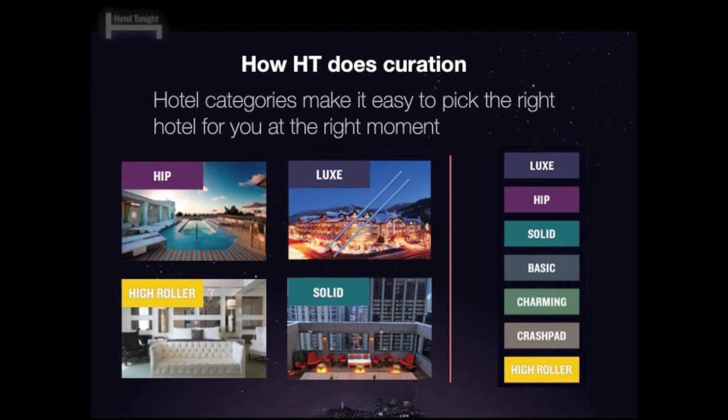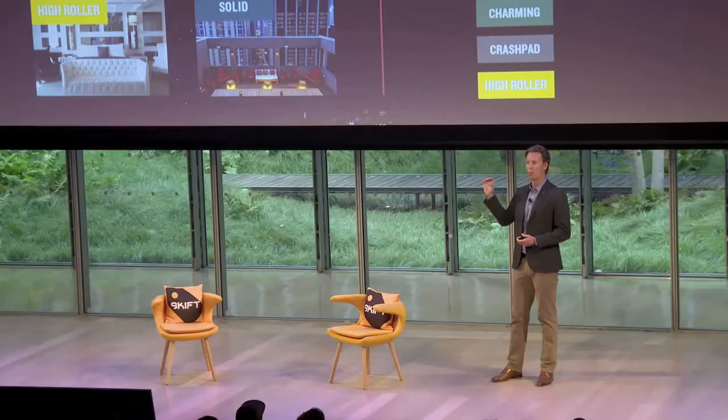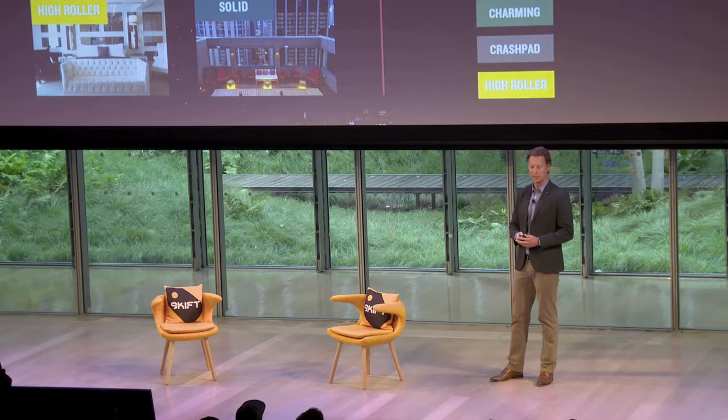We further curate by adding a perspective — a point of view. We don't just use five-star or four-star ratings; I don't think that really tells you very much. What we do tell you is the mood and vibe of the hotel. Between two hotels that are equal in amenities and service, one might be 'hip' and the other 'charming' — that's a very different experience. With one color and one word, you can quickly tell it's a different hotel. It saves you time and gives you confidence.